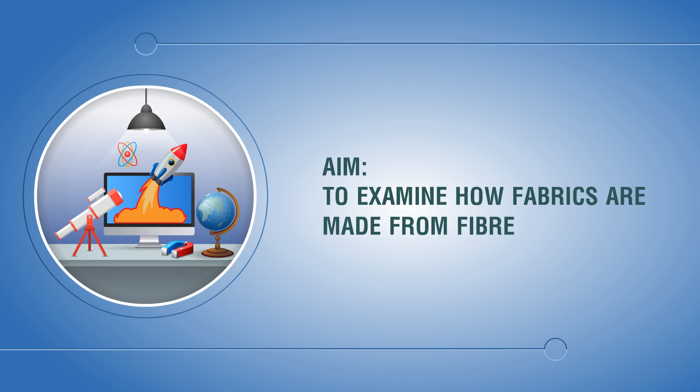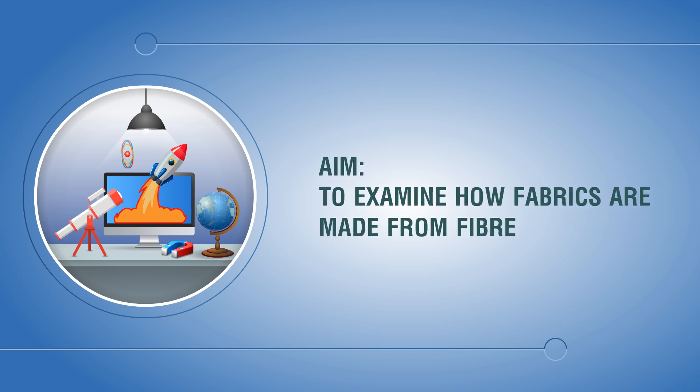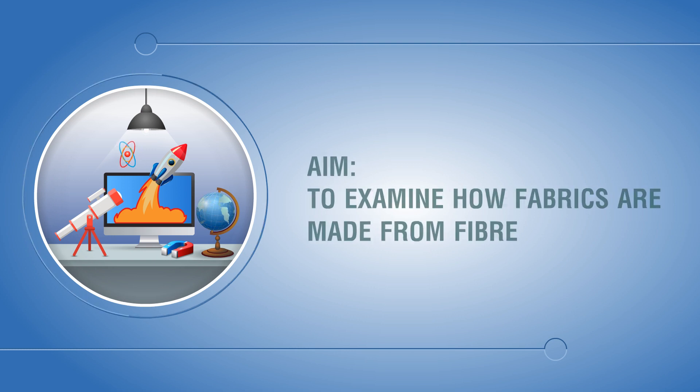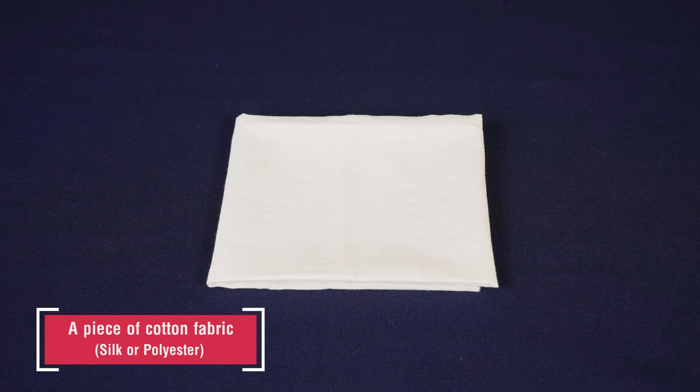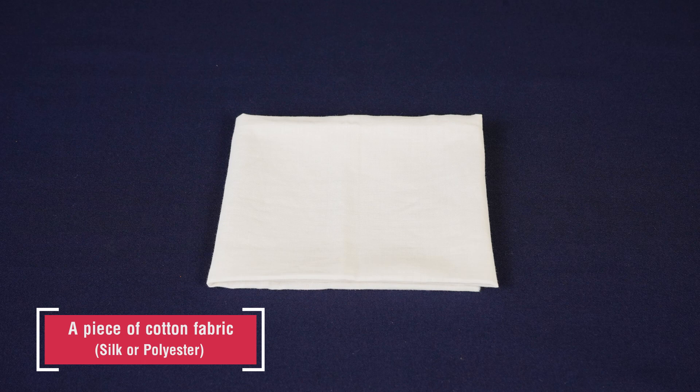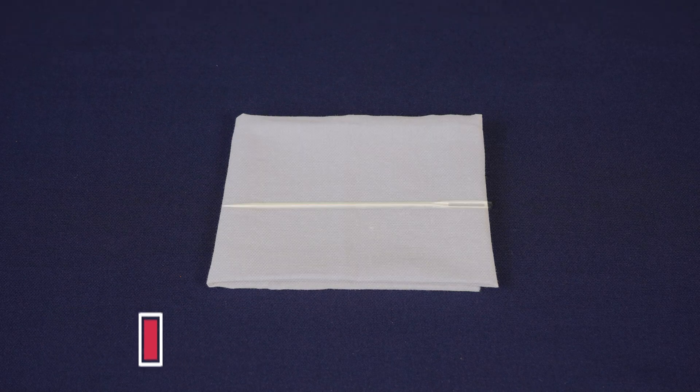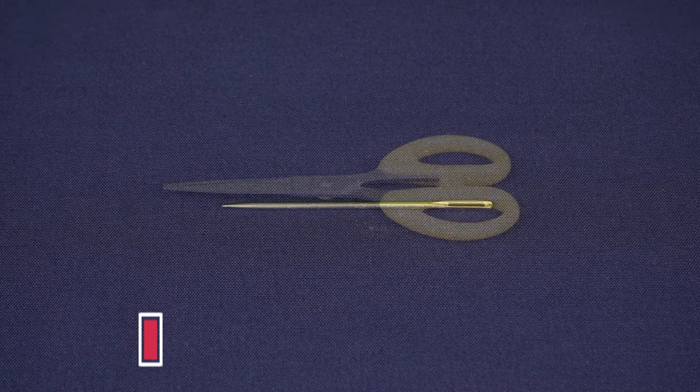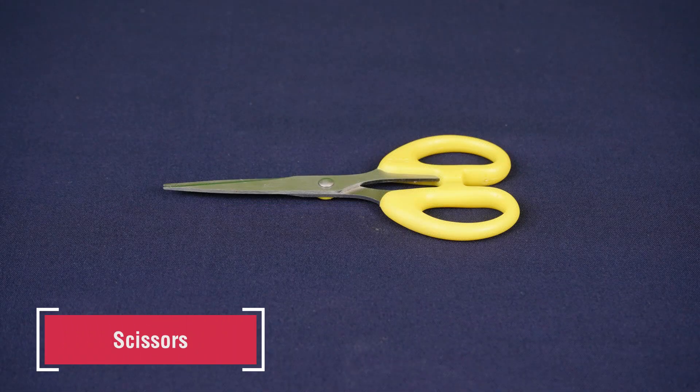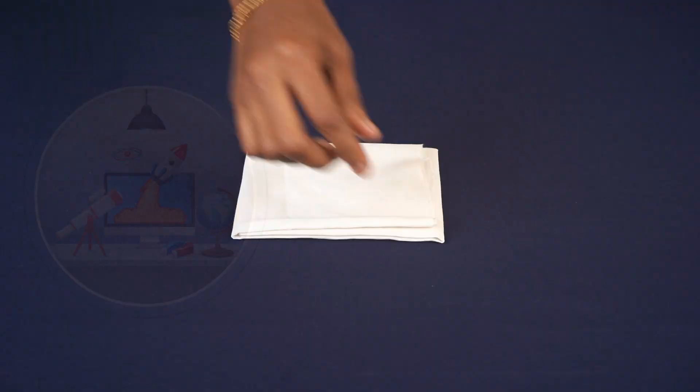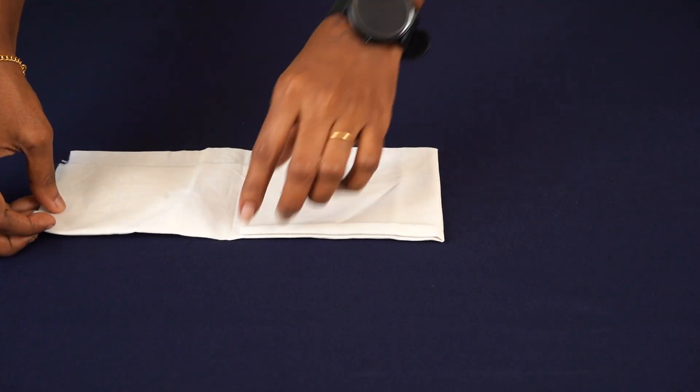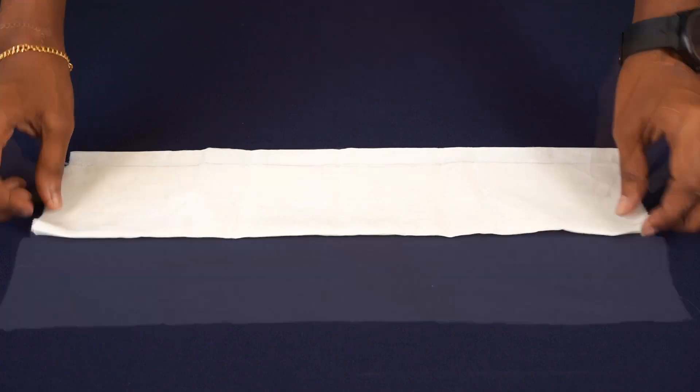Aim: to examine how fabrics are made from fiber. Materials required: a piece of cotton fabric, silk, or polyester, needle, and scissors. Procedure: spread the given piece of cloth or fabric on the table.